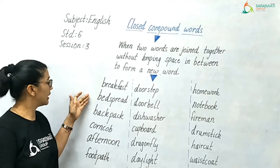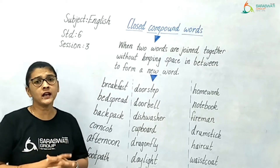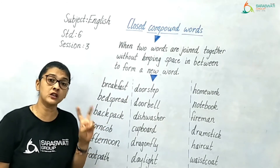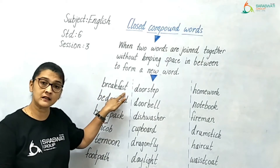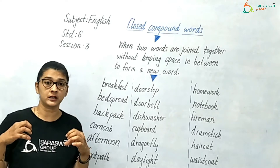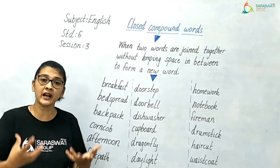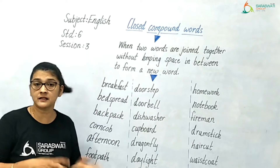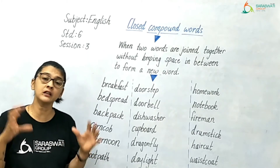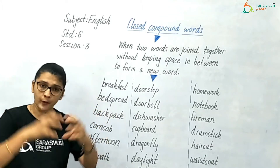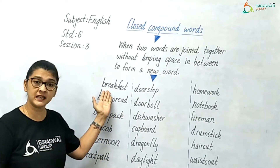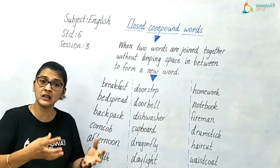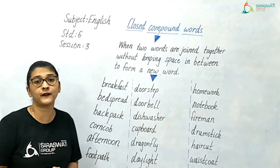Let us go through the words one by one. Breakfast — this word is formed by joining two words. 'Break' means to break something, and 'fast' means fast. But when they are brought together and form a single word, 'breakfast,' that creates a new meaning: the meal which we have in the morning.